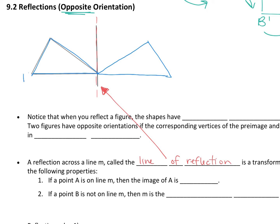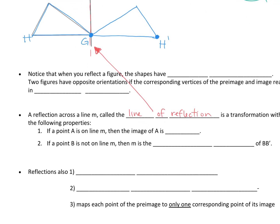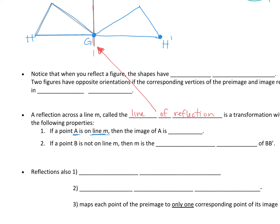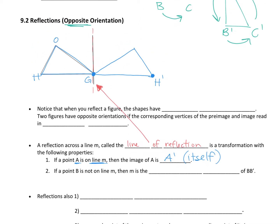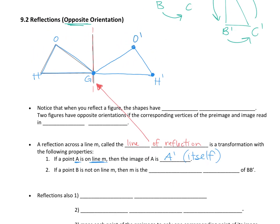If I name this triangle HOG, what is the point on the bottom of the other one? H prime — that's our new H. Where is G prime? It's the exact same point as G. If it's on the line, it's the same point. If point A is on the line, the image of A is A prime, or itself. If a point is on the line of reflection, it doesn't go anywhere — it stays at that point. That makes this point O prime.